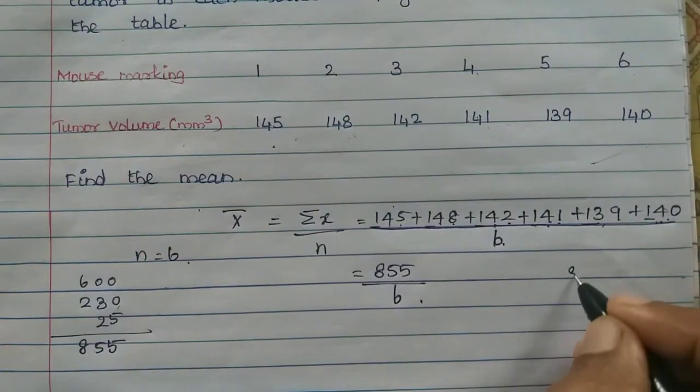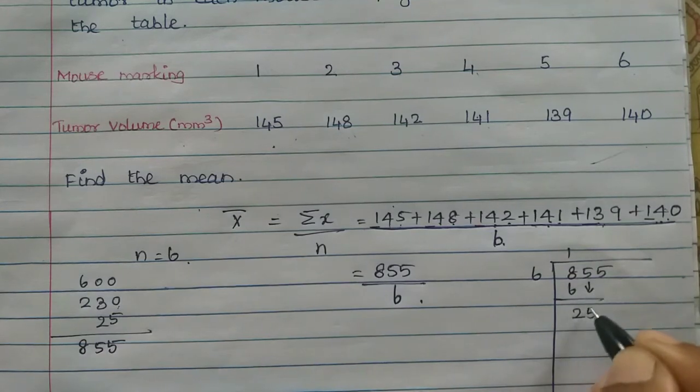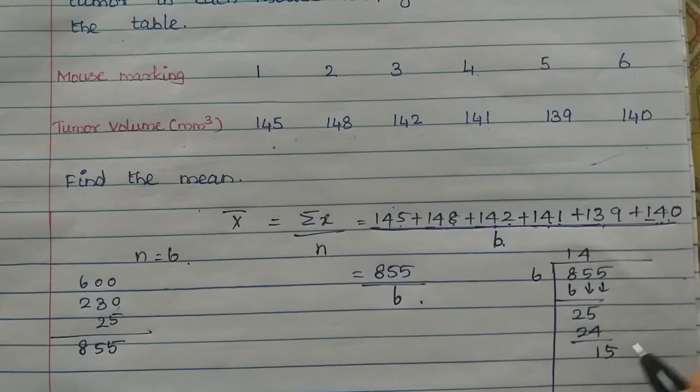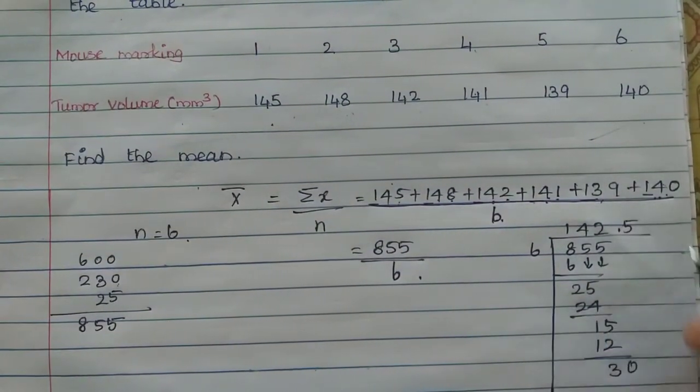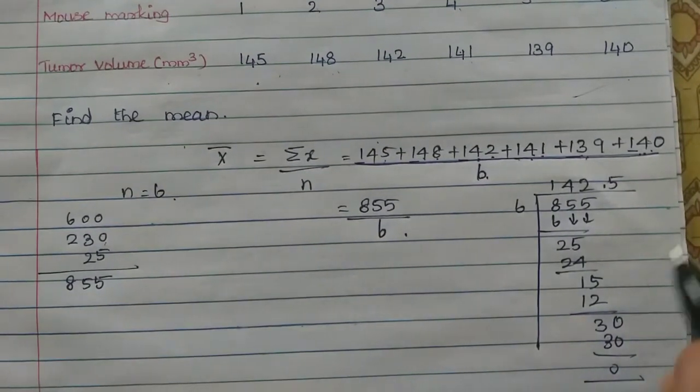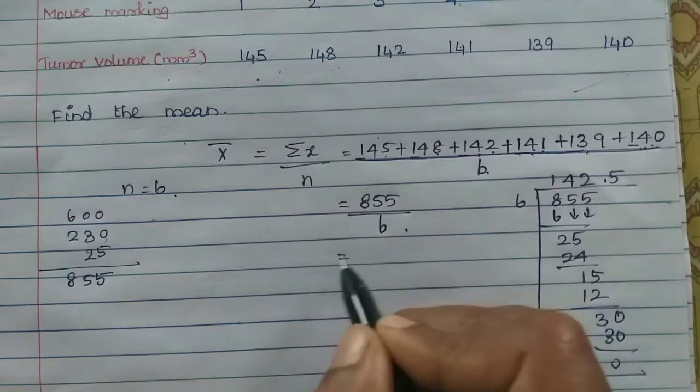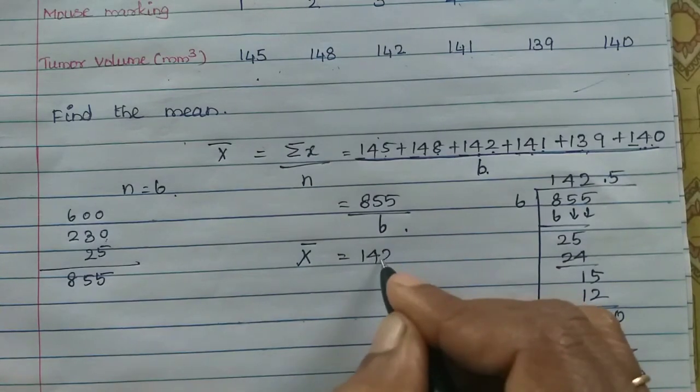6 divided by 6. So 855 divided by 6. 6 ones are 6, balance 2. 6 twos are 12, so 6 fours are 24, balance 1. 6 twos are 12, balance 3. Which is equal to the mean of the tumor. That's why we call it 142.5.